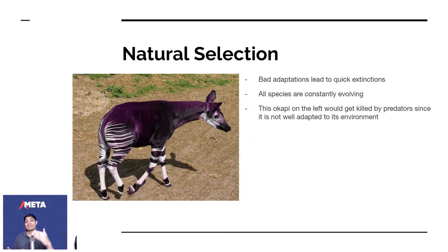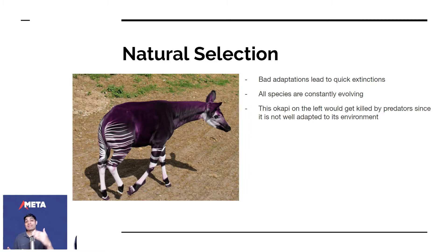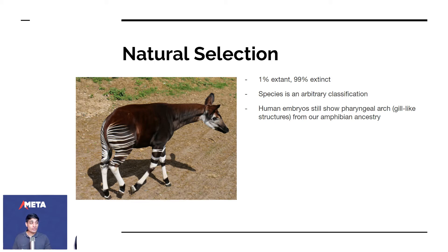We still show signs of our early evolution. Human embryos, as they grow, have signs of the pharyngeal arch — gill-like structures found in fishes today. In human beings it differentiates into the neck and parts of the head, but it's of no real use — it's a vestigial relic.